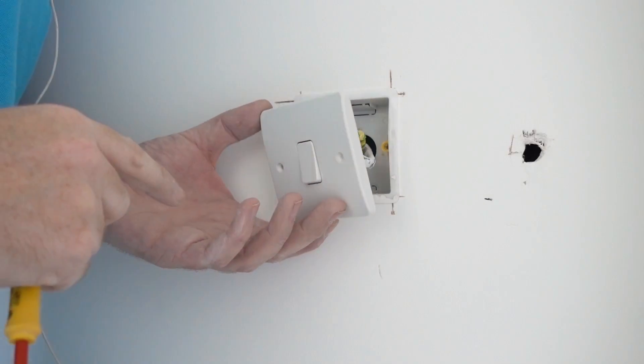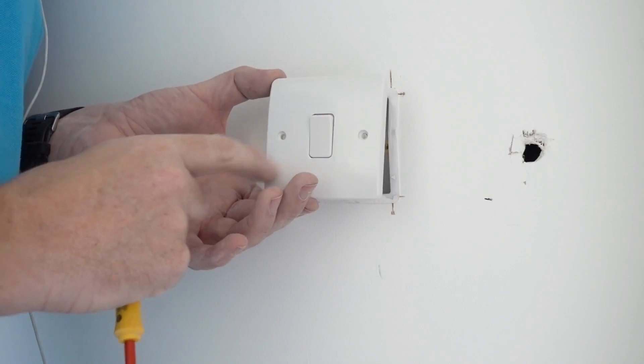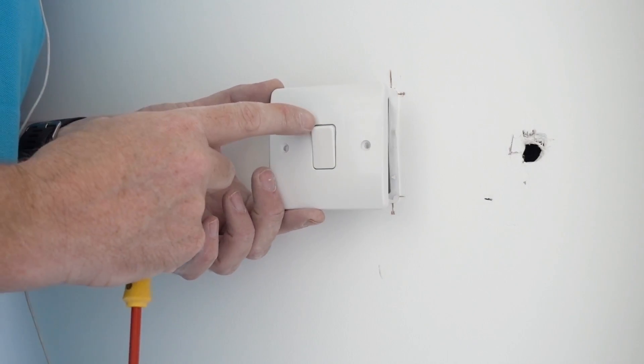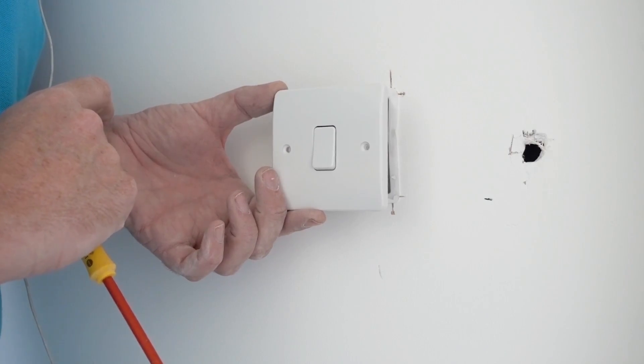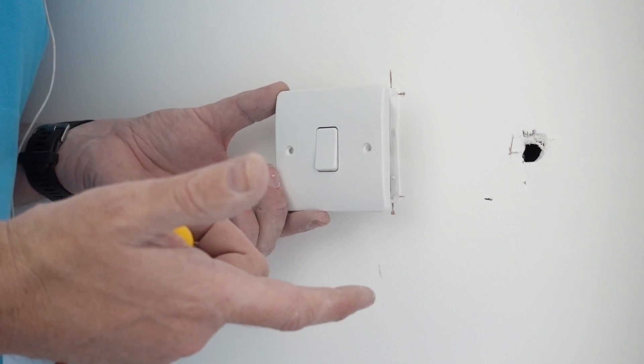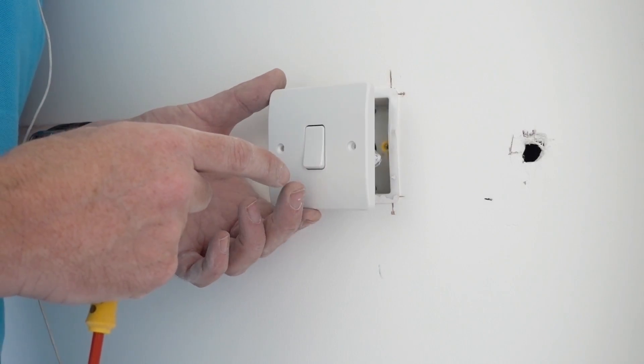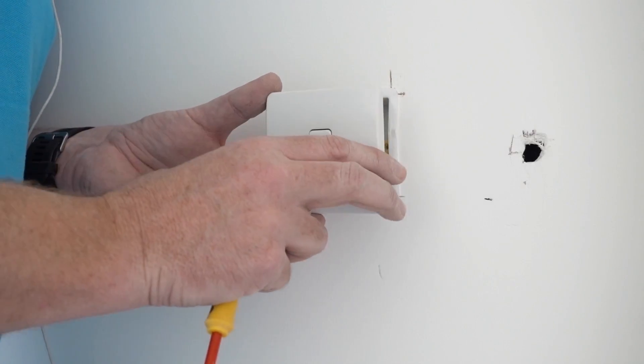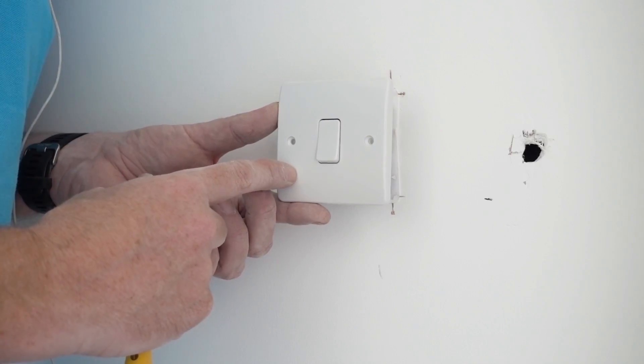The only thing to note here is that's traditionally an on position for a light switch and that's traditionally an off position. If in doubt, just take a look at a socket because they normally have the red markings on it. You don't really know until you turn the power on if it's the right way up or not.